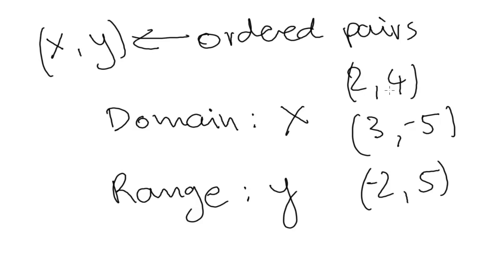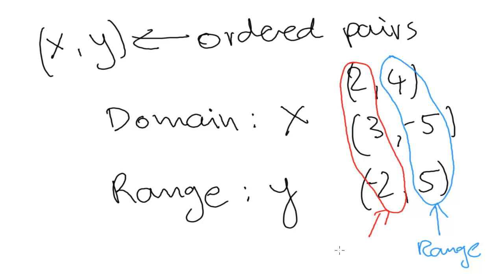So the way to identify your domain given your ordered pairs: first you'll have to take your x's, let's circle them in red, and then you'll take your y's. So this set will be your range and this set, the red one, will be your domain.